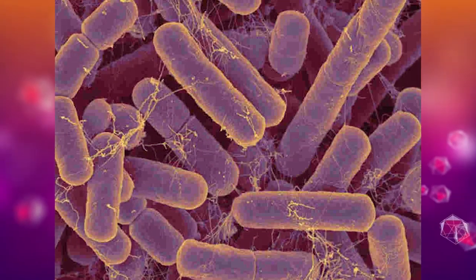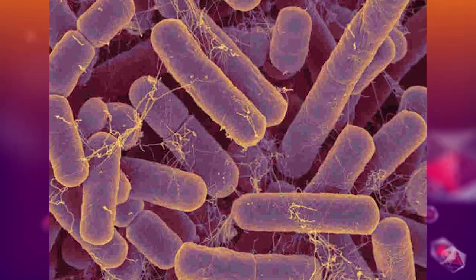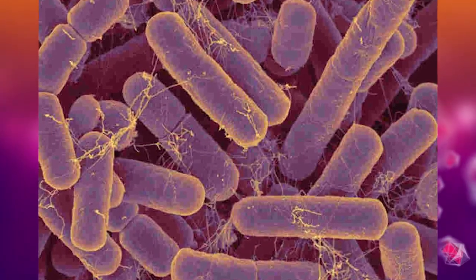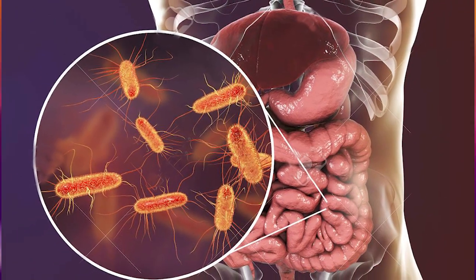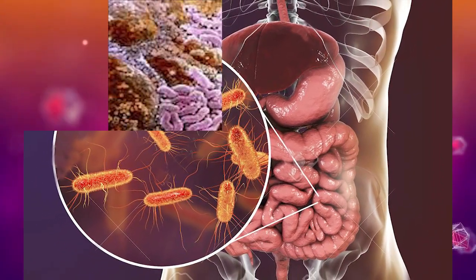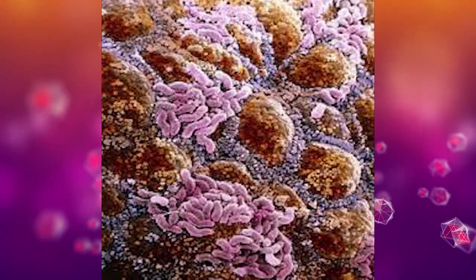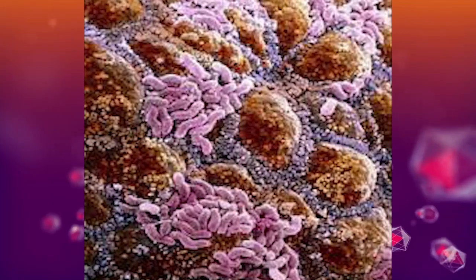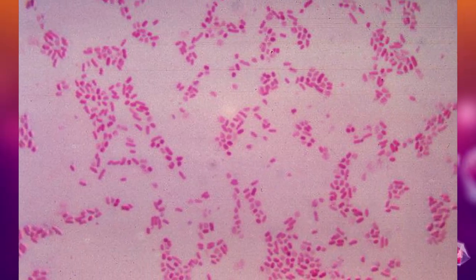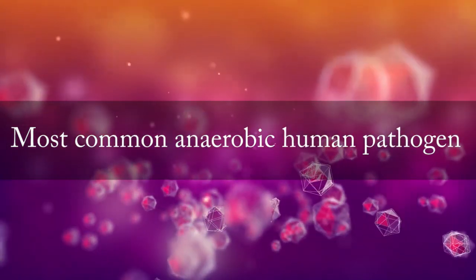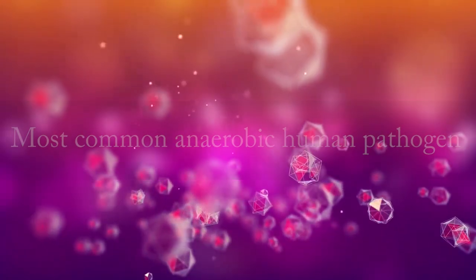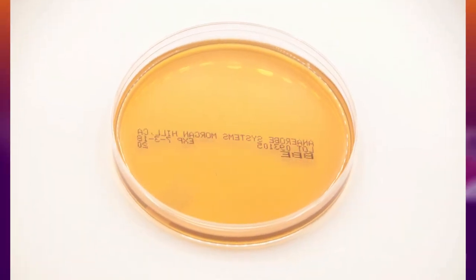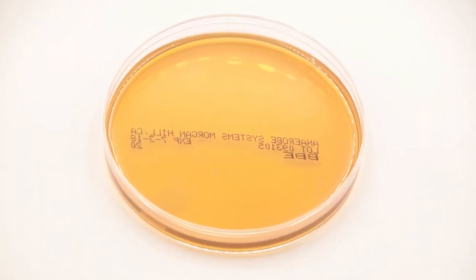Bacteroides fragilis is the most abundant bacterium found in the human colon, reaching densities of 10 to the power of 11 cells per gram of feces. It is also the most common anaerobic human pathogen.